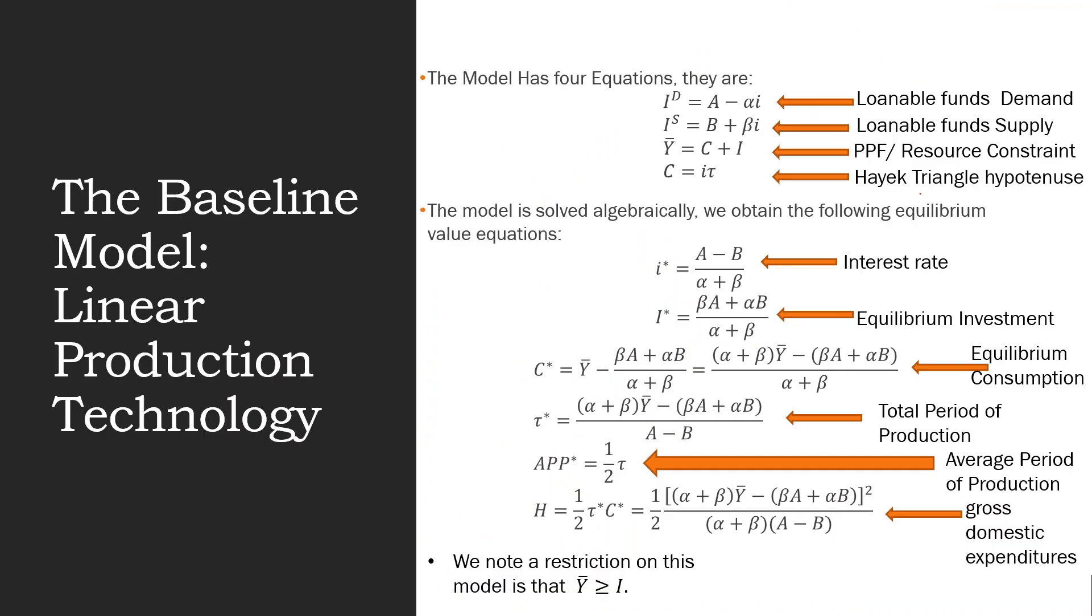This model has four equations: the loanable funds demand, the loanable funds supply, the PPF or resource constraint in this context, and the Hayek triangle hypotenuse.